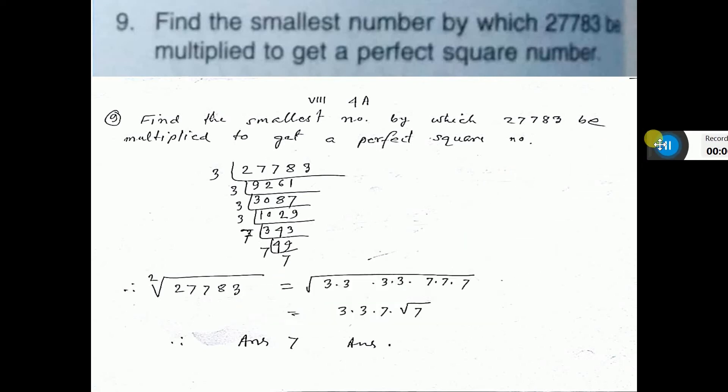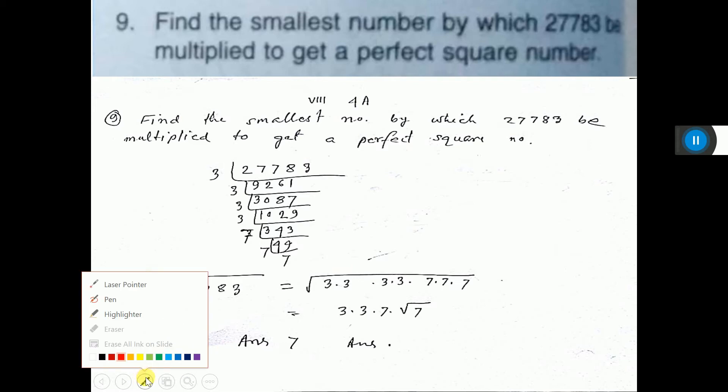Find the smallest number by which 27783 be multiplied to get a perfect square number. So the number, I have taken the factor. See the factor I have taken.